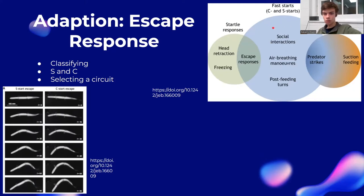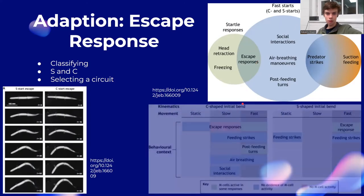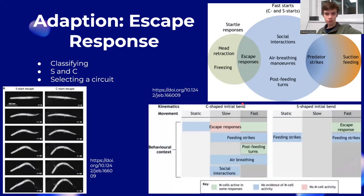What is the underlying circuit behind this behavior? It turns out that there are several circuits that can cause both the C and S shape. This table gives us a really nice classification of which circuit is being activated, depending upon the latency and the behavior. We can see that the M cell is necessary for the fast escape response. M cells stand for Mauthner nerve cell, which is a large neuron in the ventral nerve cord.